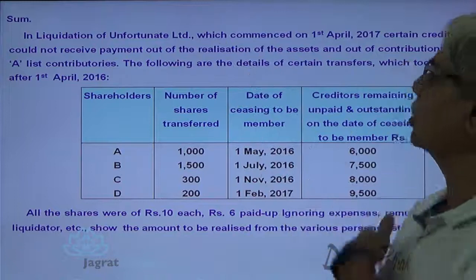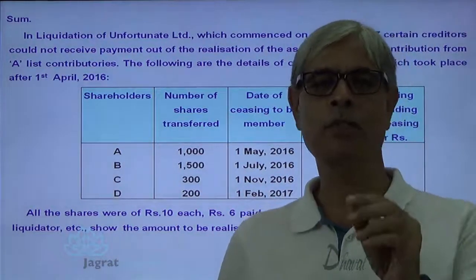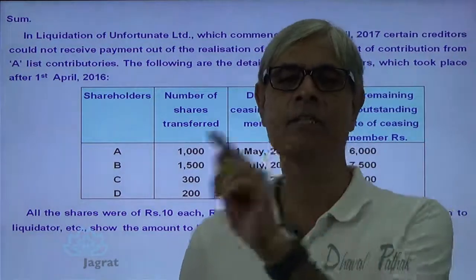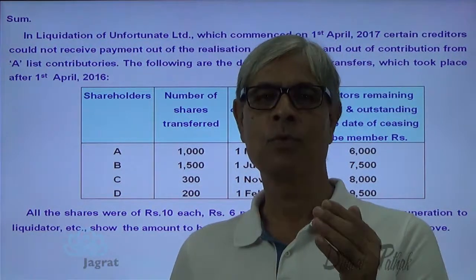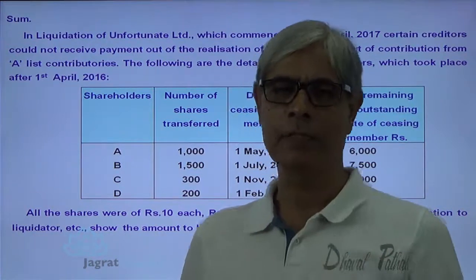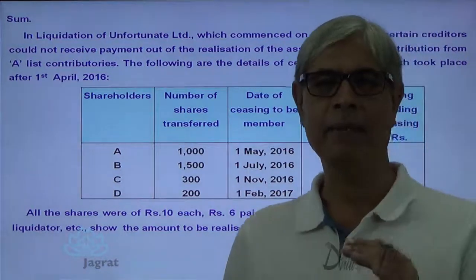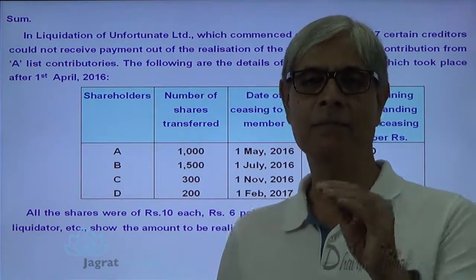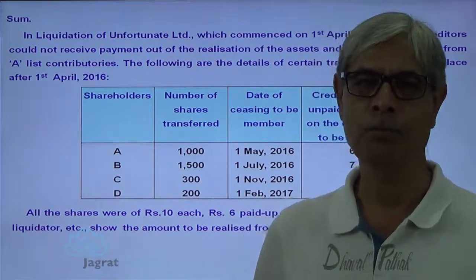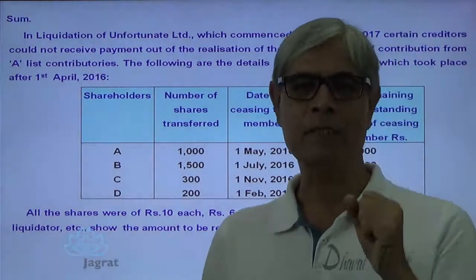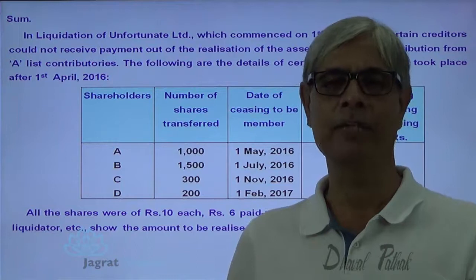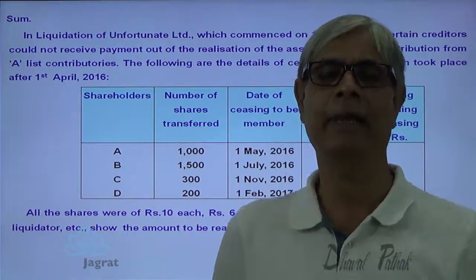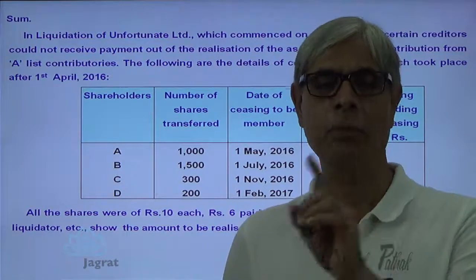Liquidation commenced on 1st of April 2017. All the shareholders acquire the status of contributory on 1st of April 2017 and they are known as List A contributories. List A contributories are obliged to pay the unpaid capital for all the liabilities of the company till the date of liquidation, subject to a restriction of unpaid capital. Whosoever transferred shares within 1 year before the commencement of liquidation are identified as List B contributories.